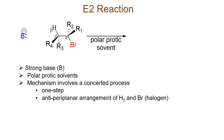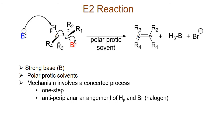What happens in the transition state based on mechanism is the base abstracts the beta hydrogen, and simultaneously the electrons in the sigma bond between the beta carbon and the beta hydrogen drop into the space between the alpha carbon and the beta carbon, and this pushes out the leaving group as a halide ion. This results in the formation of our product which is an alkene displaying a double bond between the alpha carbon and the beta carbon, along with the conjugate acid of the base used and the halide ion.